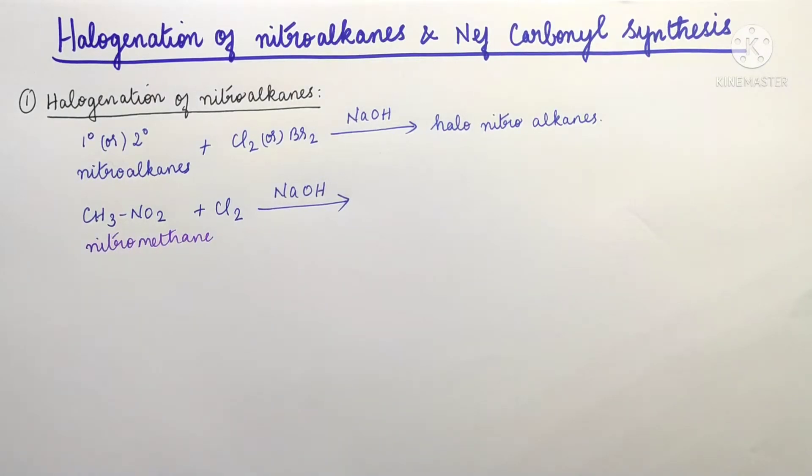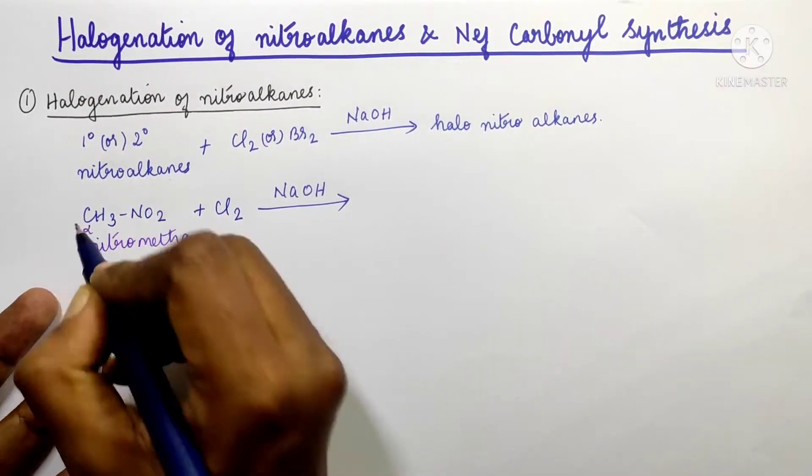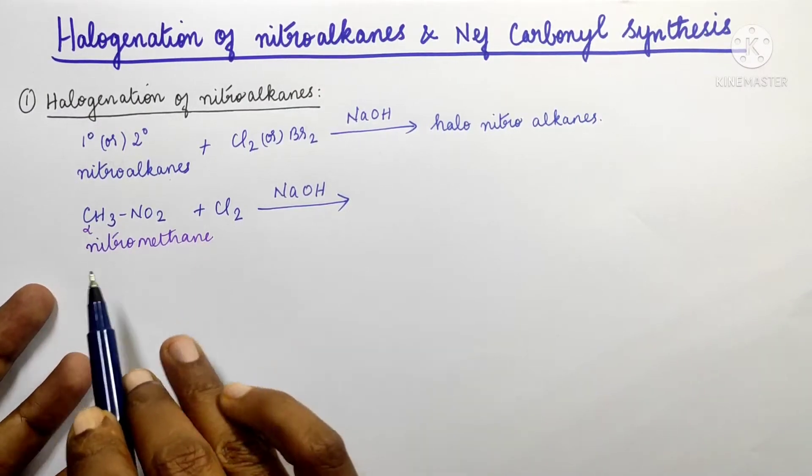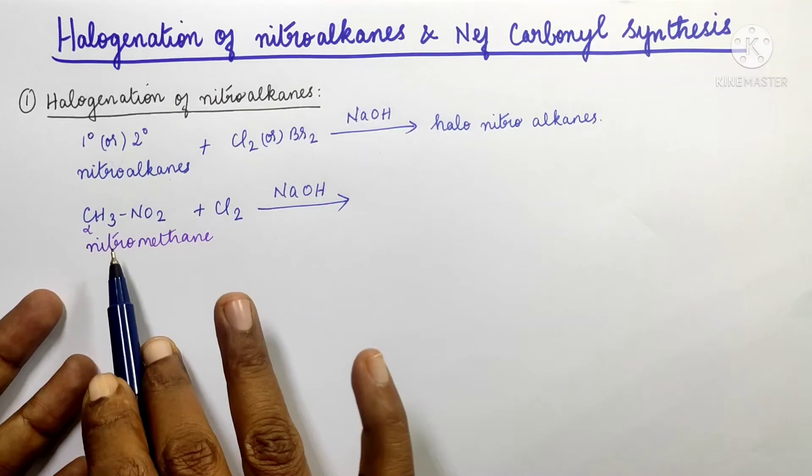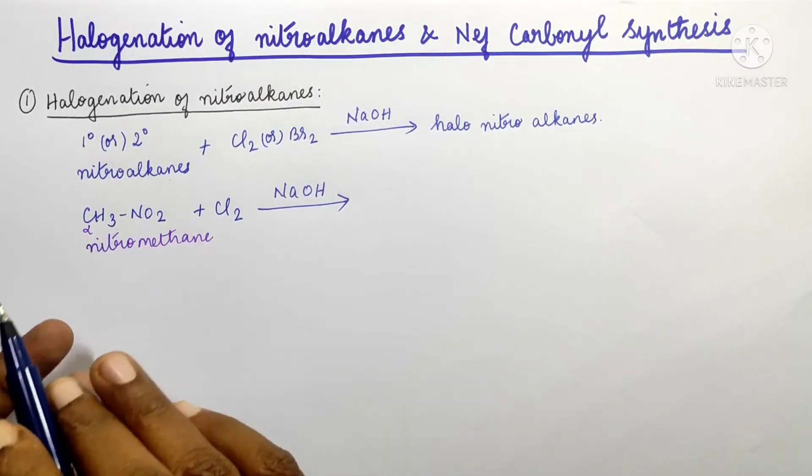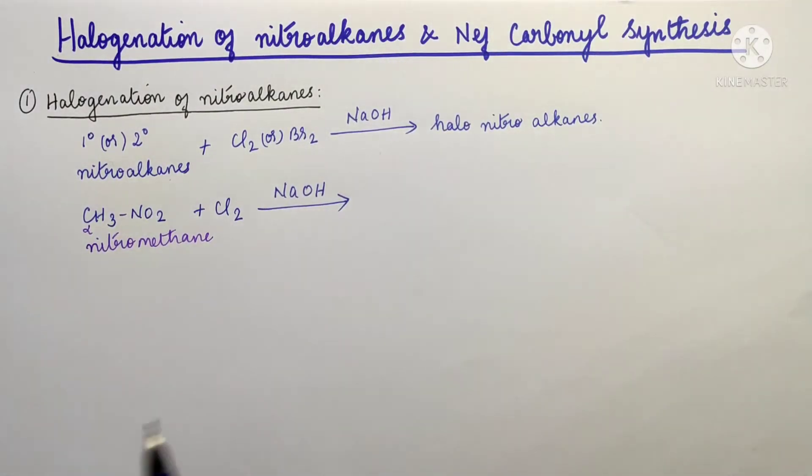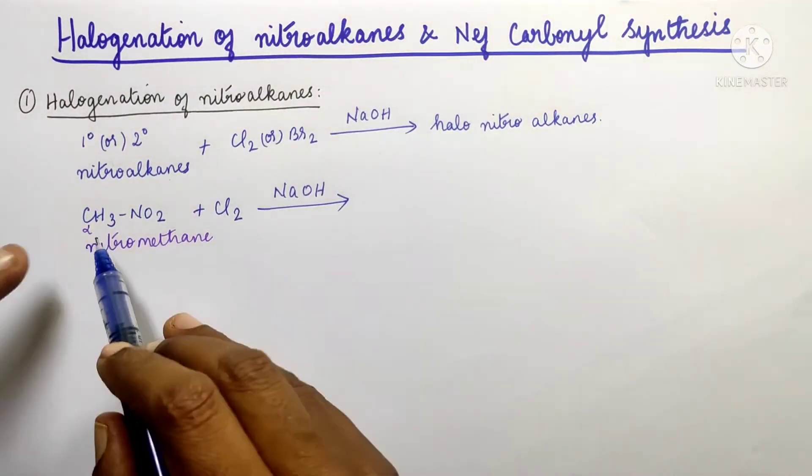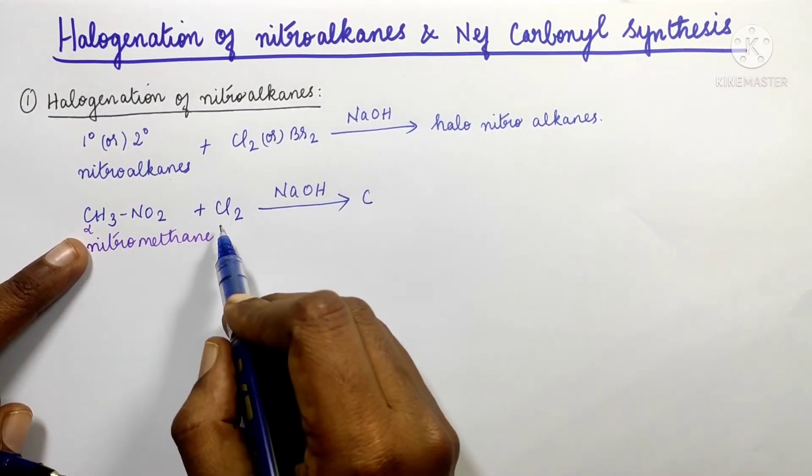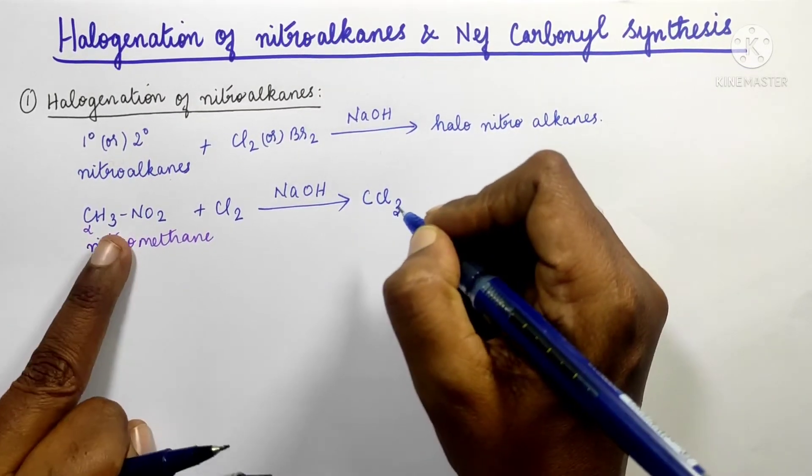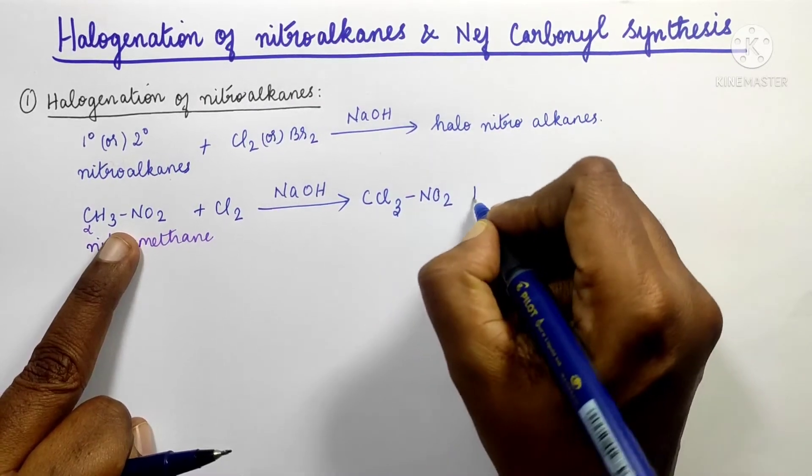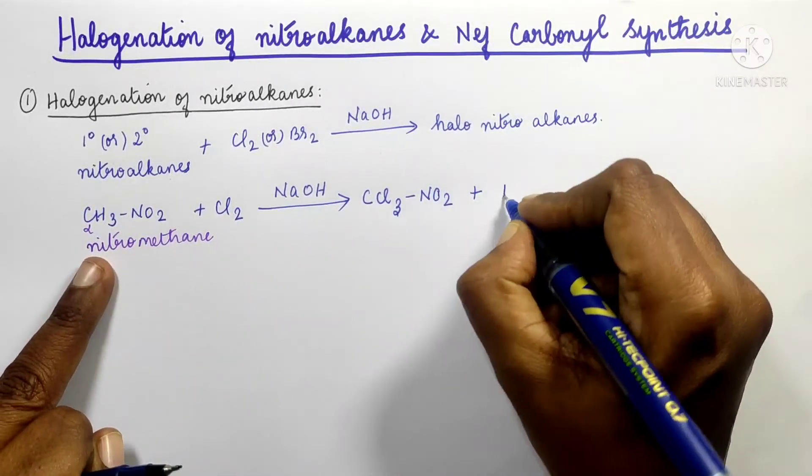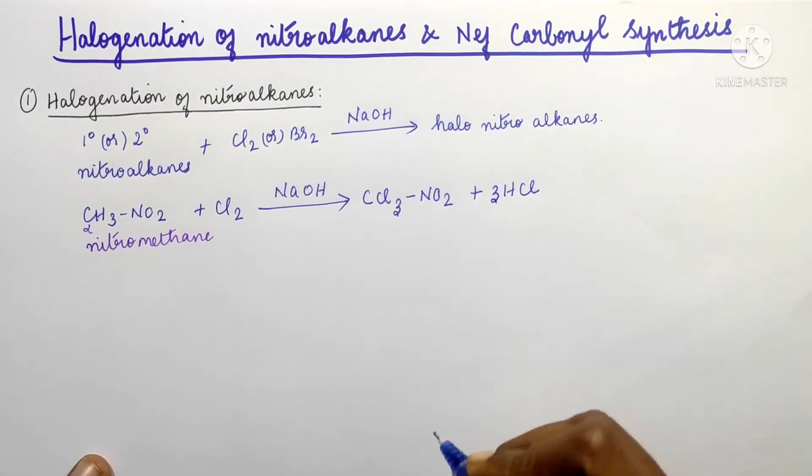So in nitromethane, this is the alpha carbon. In this alpha carbon, all the hydrogens are alpha hydrogens. Chlorine is passed. This chlorine replaces all the alpha hydrogens completely. When halogen is passed, alpha hydrogens are replaced by halogen. In this case, the product is carbon with 3Cl and NO2, plus HCl. Three hydrogens give three HCl.